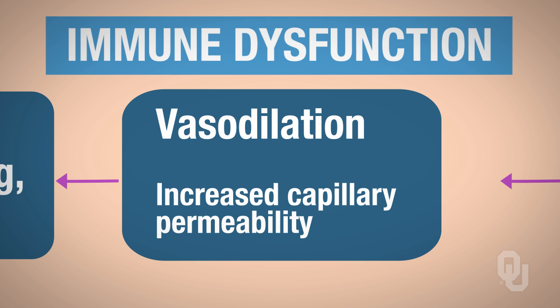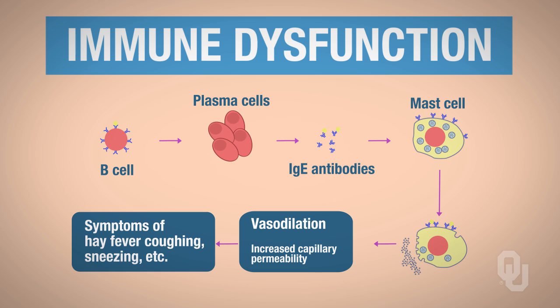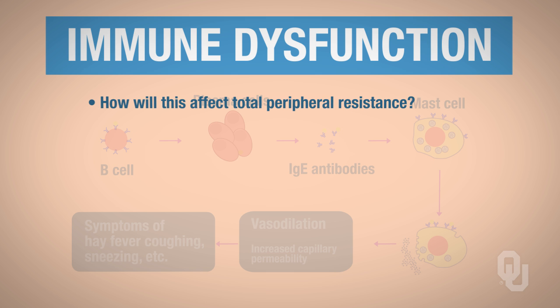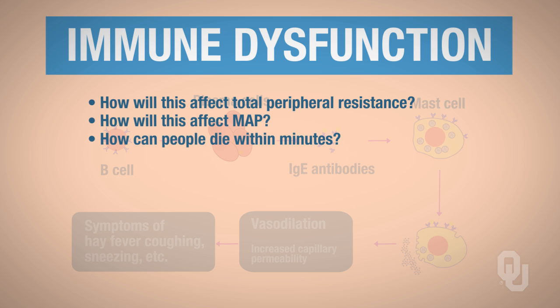Now you have to think about this happening. It's widespread when you have an acute allergic response, so this is happening throughout the body. Because it happens throughout the body and you have this vasodilation of the peripheral blood vessels and increased capillary permeability, think about how this will affect total peripheral resistance, how it will affect MAP, and therefore how people can die within minutes.